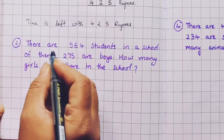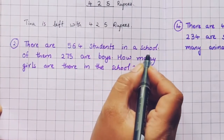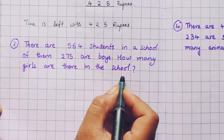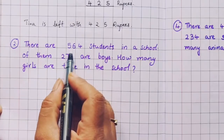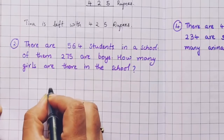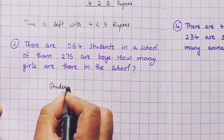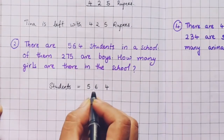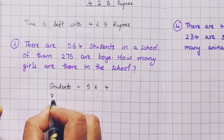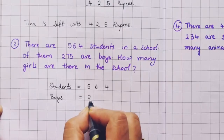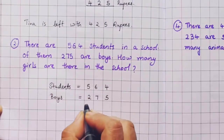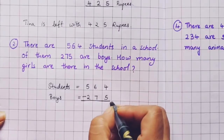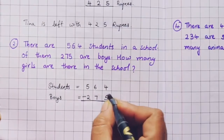The next problem. There are 564 students in a school. Of them 275 are boys. How many girls are there in the school? So first let us write the total — 564 students. Then how many boys are there? There are 275 boys. Now how many girls will be left? We have to do the minus, because from the total we are removing the number of boys, so we will get the number of girls.